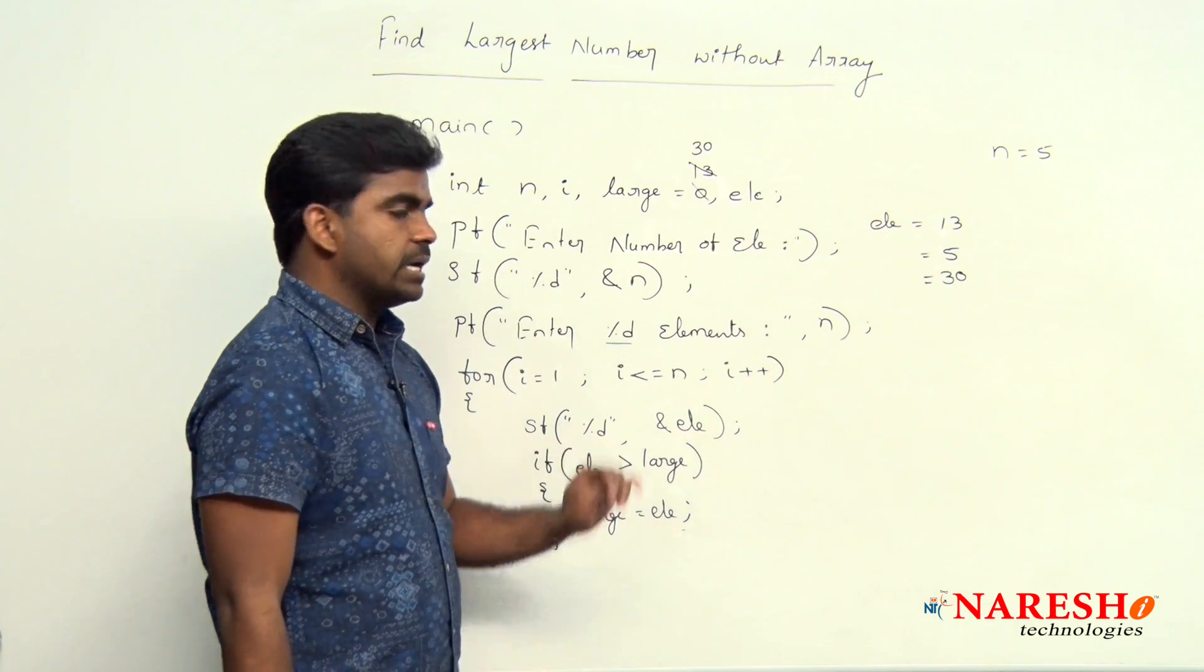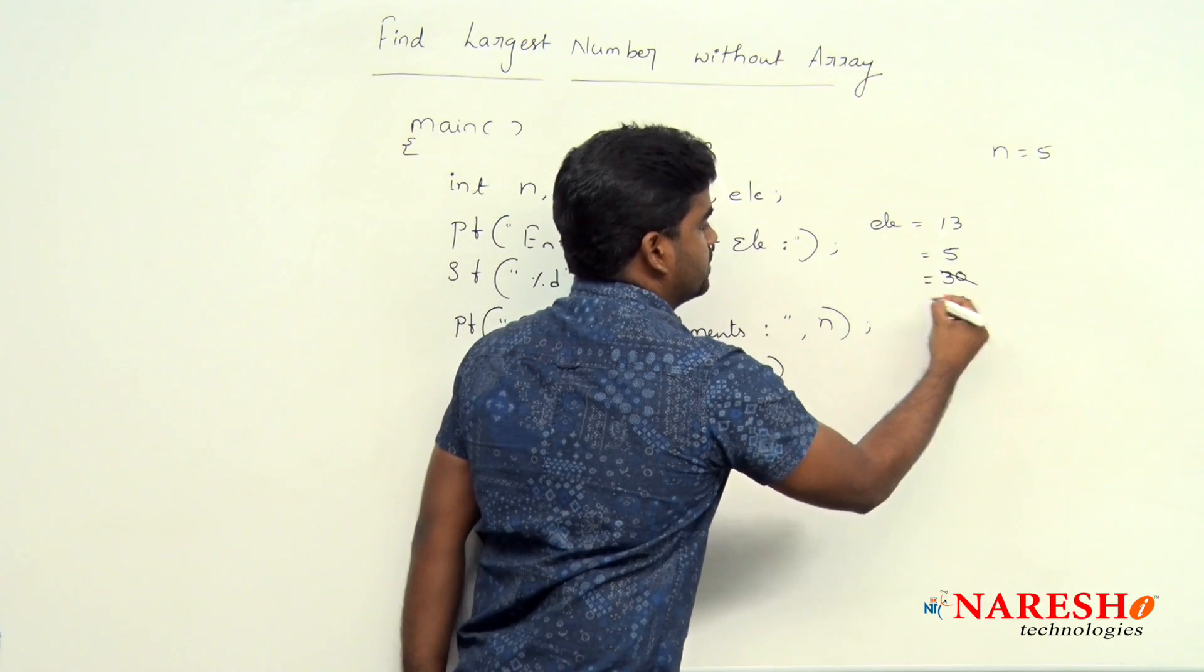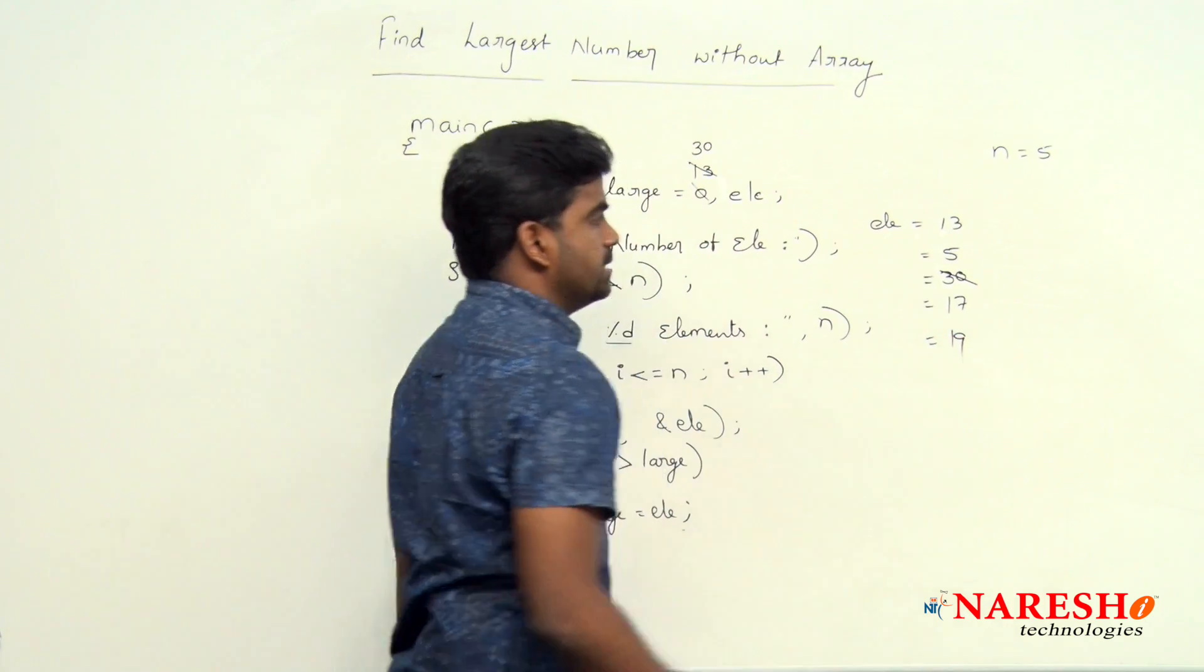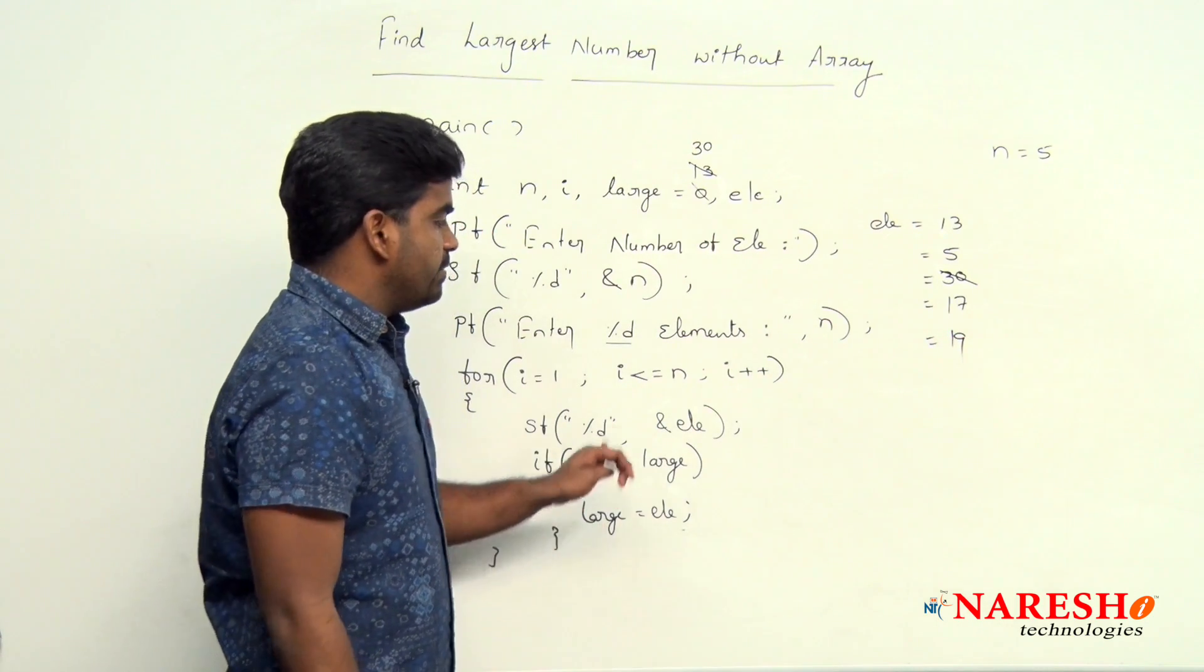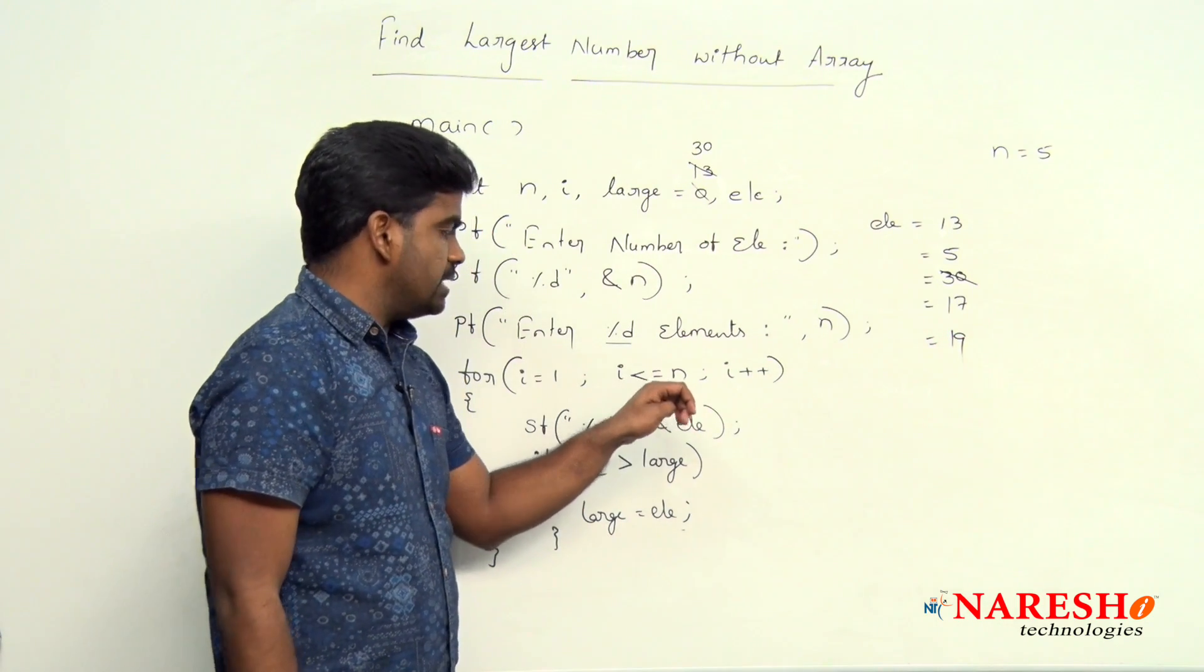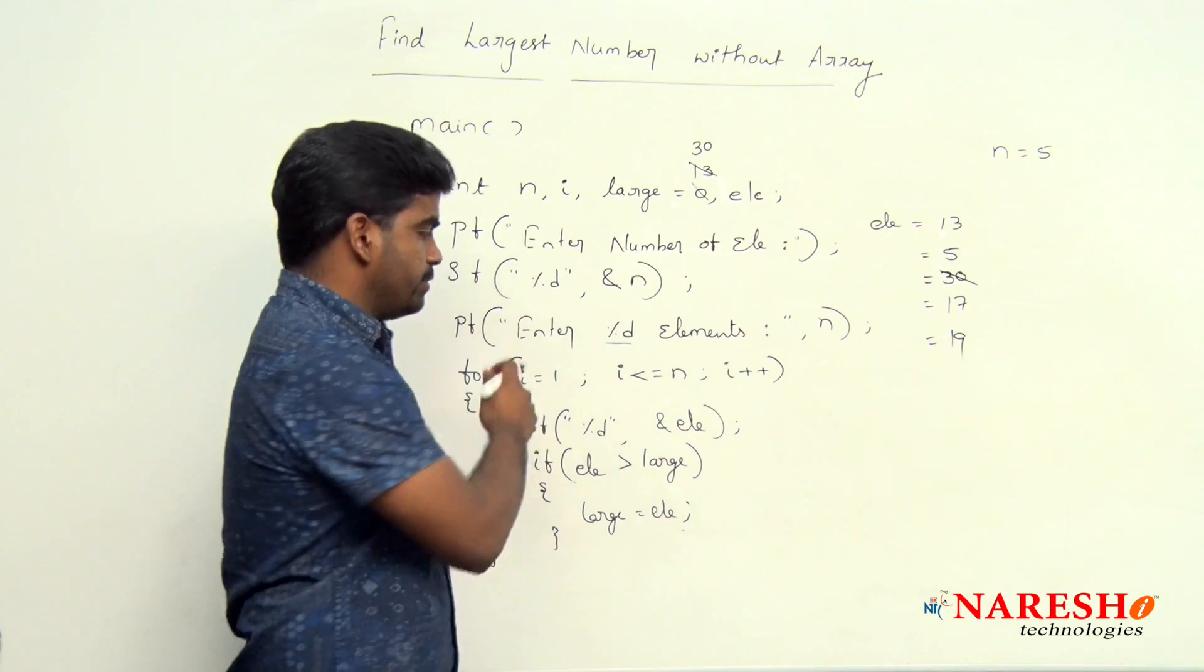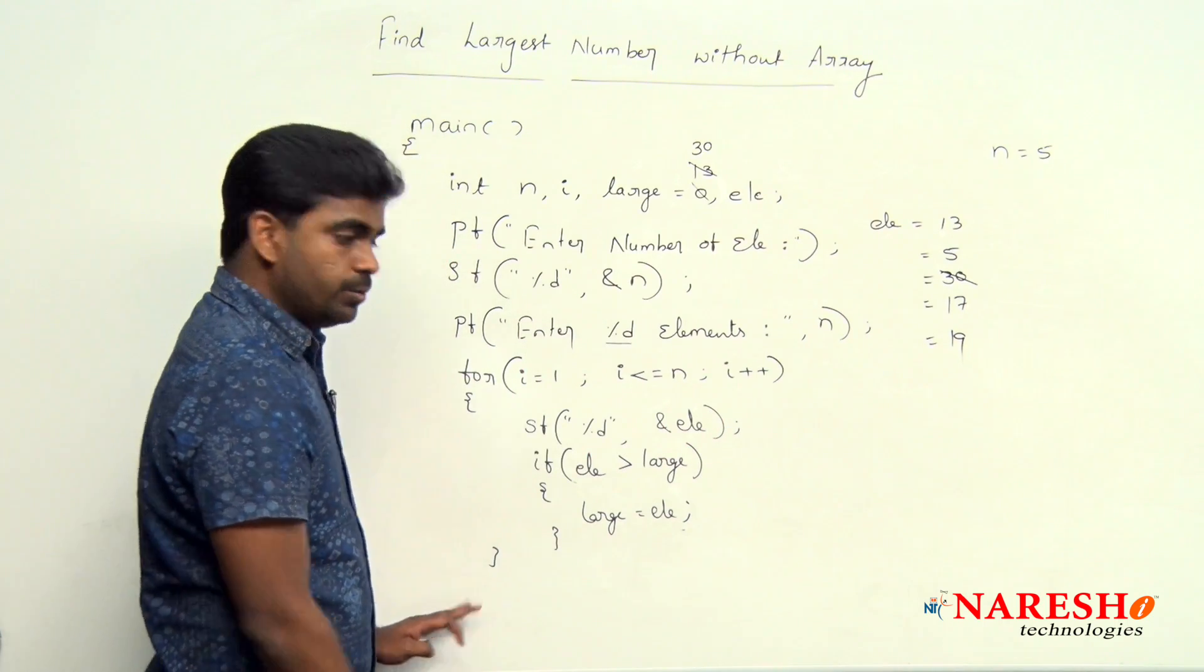Next I value become 4, suppose next value is 17. Next value is 19 suppose. Next whenever I value 6, 6 is less than or equal to 5 condition false, it will terminate. Just come out of the for loop.